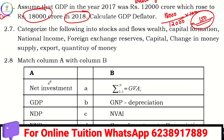Stock and flow is very important. Wealth is a stock. Capital formation is a flow. National income is a flow. Foreign exchange reserves — flow. Exports — flow. Quantity of money is a stock.